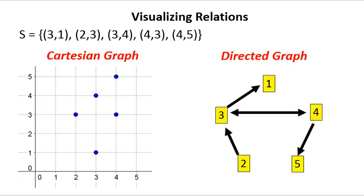Relations can be expressed symbolically, but like many mathematical topics, they can better be understood with visual representations — in other words, by graphing the relations you get a better understanding of them. There are two common ways to represent relations visually. The first is a Cartesian graph, which is the traditional x-y graph used with lines and functions. In this case, we're going to graph the relation S, which is composed of five ordered pairs, five elements.